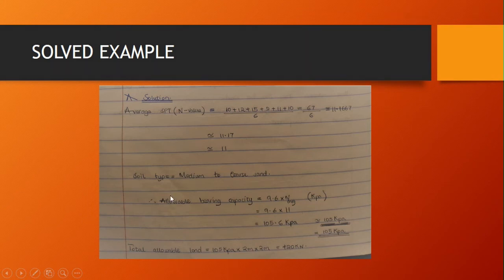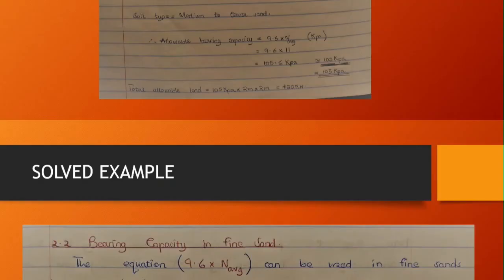If you are required also to calculate the total load to be carried by the footing, total allowable load, you're going to multiply the allowable bearing capacity by the area of the footing. The area of the square is L squared, which we have a length being 2 meters, so L squared will be 2 by 2 which is 4. So you multiply 4 by 105, which is allowable bearing capacity. So the total allowable load will be 420 kilonewtons.